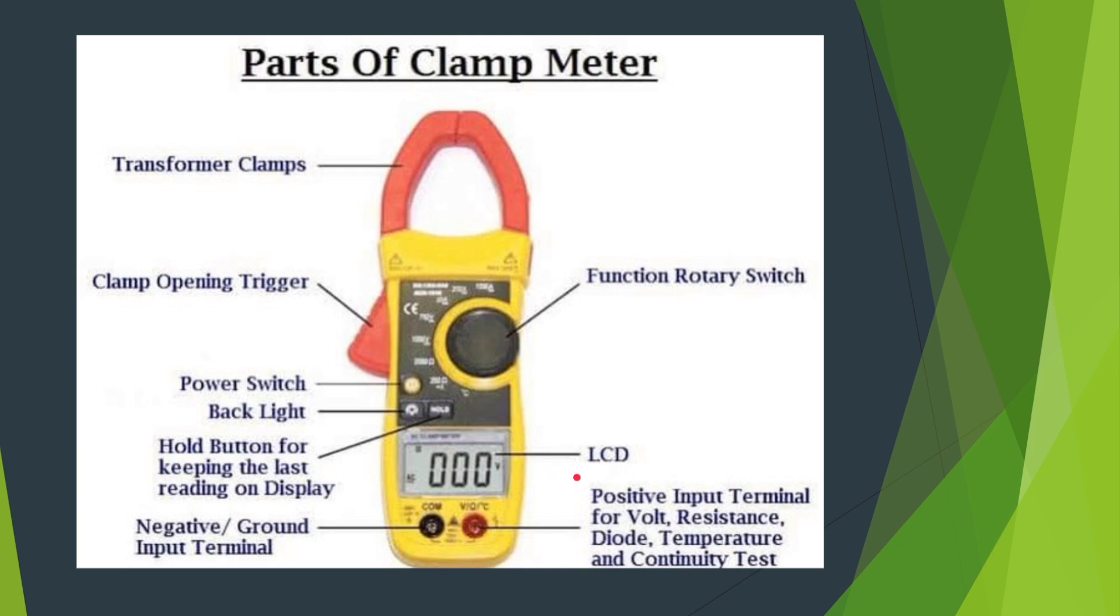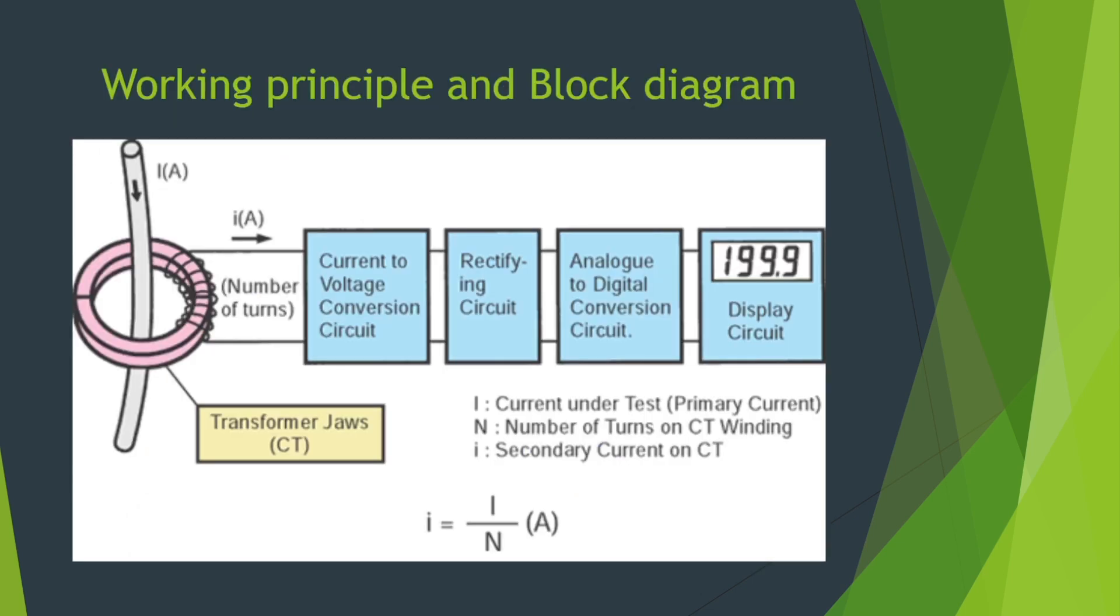LCD display is used to show the measurements. Function rotary switch enables the user to select different measurement modes. Let's understand the working principle using this block diagram. In general, AC clamp meters operate on the principle of current transformer which is used to pick up magnetic flux generated as a result of current flowing through a conductor. Assuming a current flowing through a conductor to be primary current, you can obtain a current proportional to the primary current by electromagnetic induction from the secondary side of the transformer which is connected to a measuring circuit of the instrument. This permits you to take an AC reading on the digital display as illustrated by the block diagram. The formula given here can be used to calculate the current.